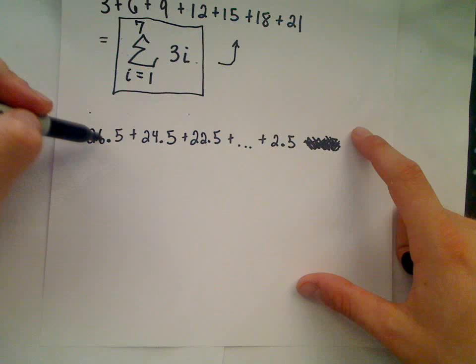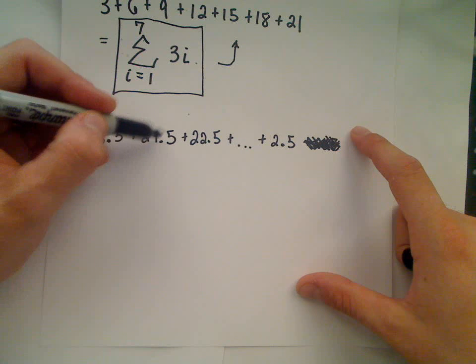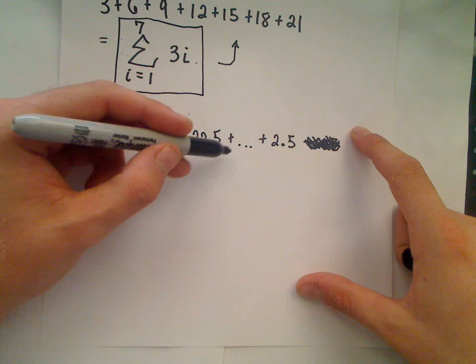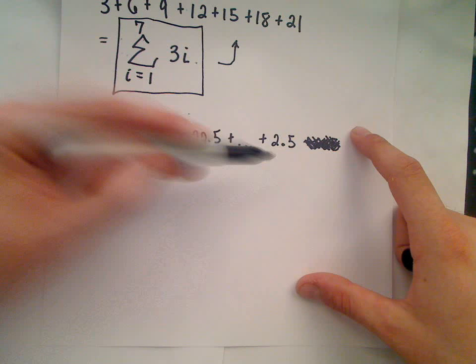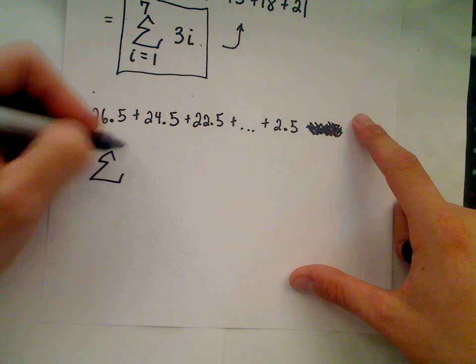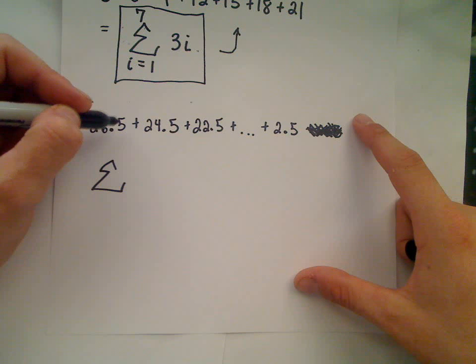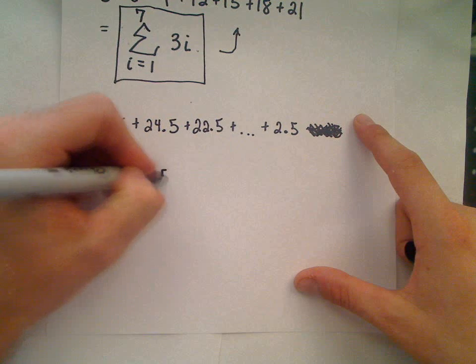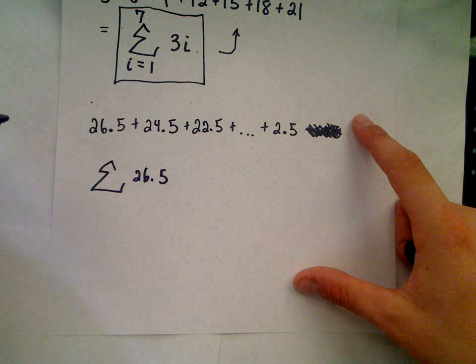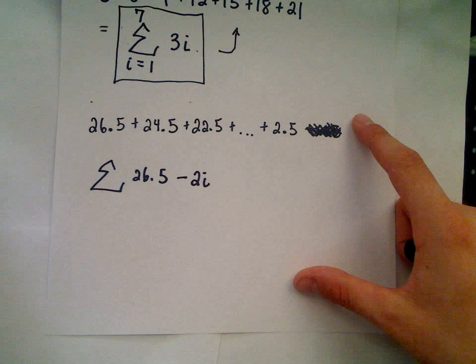So one last one here - these are pretty basic examples. Notice we start with 26.5, and then we bump that down by 2 to 24.5, then we bump it down by 2 to 22.5. The little dots simply indicate that this pattern continues on until the last number we'll use will be 2.5. So we've got a sum, so we can use our summation notation. All we're doing is basically subtracting away multiples of 2. I think about it as being my starting point, which is 26.5, and then I'm subtracting away multiples of 2.